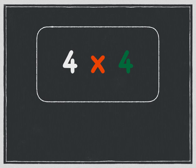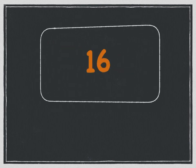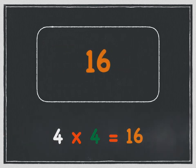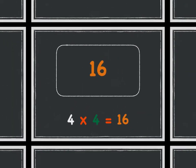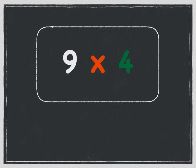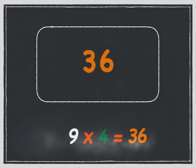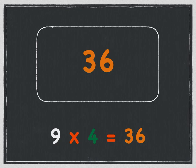Four times four is sixteen. Four times four is sixteen. Nine times four is thirty-six. Nine times four is thirty-six.